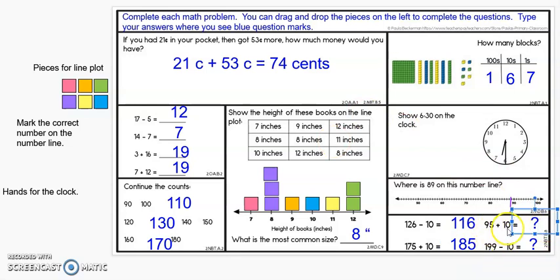Over here we have 95 plus 10. And that's an interesting one because when we add another group of 10 to 9, we get 10 groups of 10. So we have 105. Last problem, 199 take away 10. Well, we're going to move away 1 ten from this center column here where the tens column is. And instead of being 9 groups of 10 there, it will be 8. So our answer will be 1, 8, 9, 189.